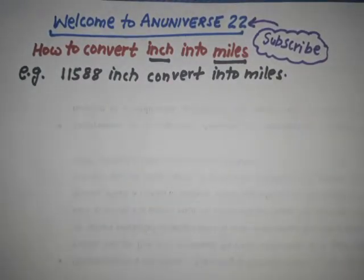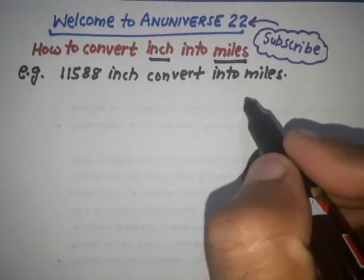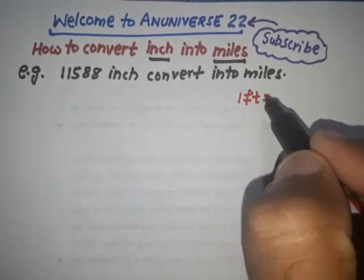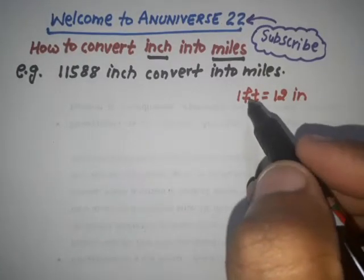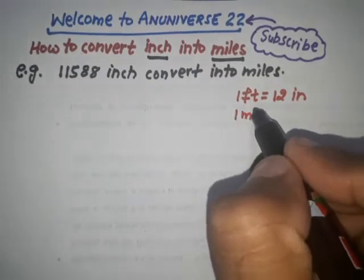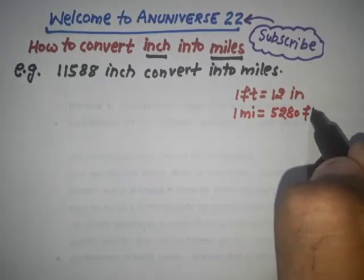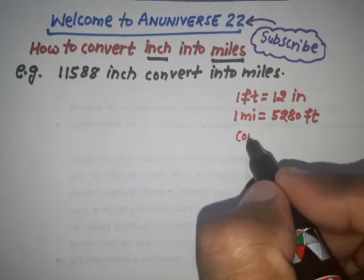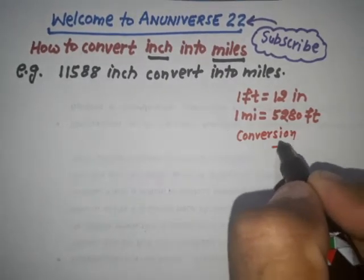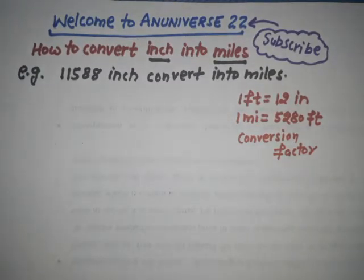Before converting into miles, firstly we know the conversion factor. As we know, one foot equals 12 inches, and one mile equals 5,280 feet. This is the conversion factor.